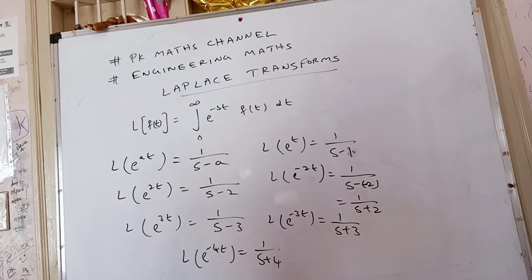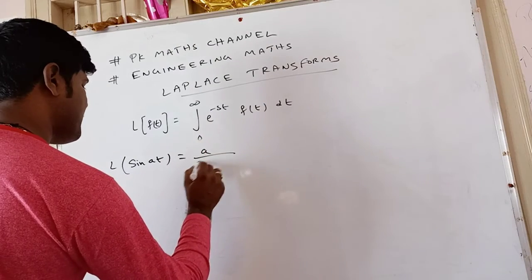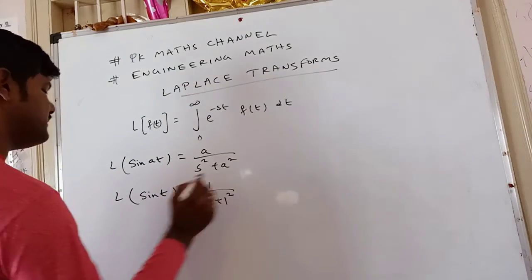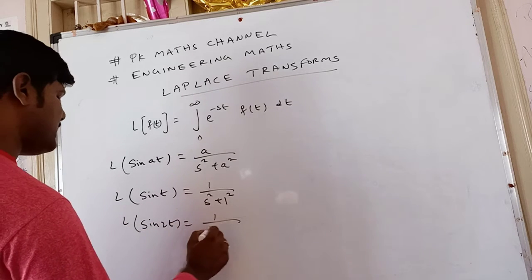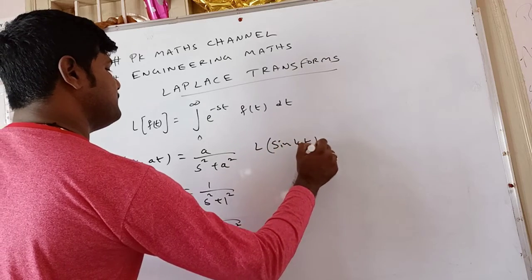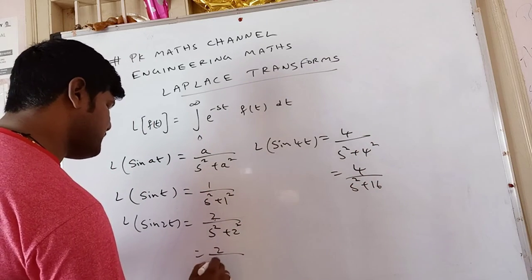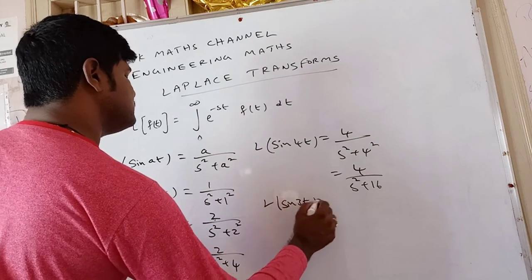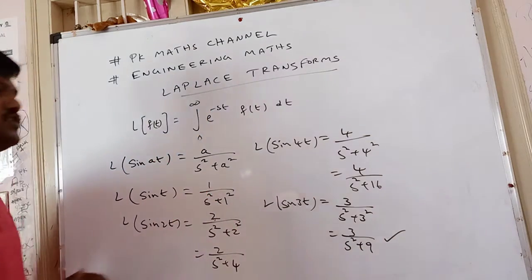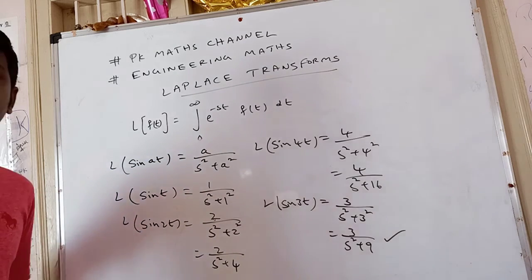Next we go to the formula for L{sin(at)}. Laplace of sin(at) is equal to a / (s² + a²). For example, L{sin(t)}: here a = 1, so it is 1/(s² + 1). L{sin(2t)} = 2/(s² + 4). L{sin(4t)} = 4/(s² + 16). L{sin(3t)} = 3/(s² + 9). So L{sin(at)} = a/(s² + a²) — the numerator is a. When sin is given, the numerator is a.